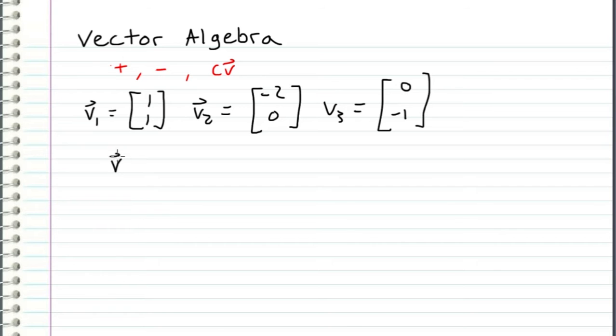So if we wanted to add these three vectors together, then in order to compute the sum, all we do is add or subtract along the rows. So what I mean by this is, if we plug in the values for each of these vectors, we have [1, 1] plus [-2, 0] plus [0, -1].